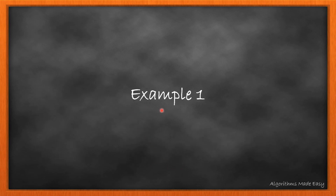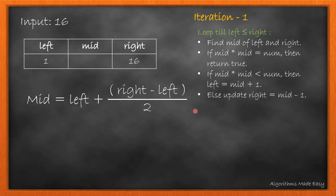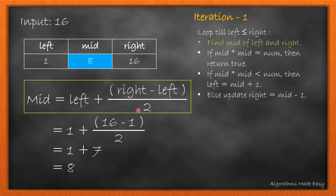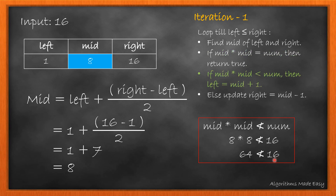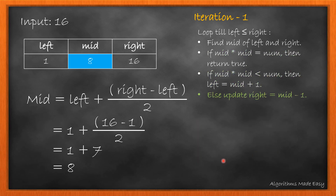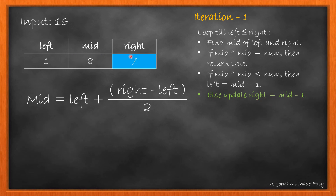Let's start with the first example. Initially, left will be 1 and right will be 16. Since left is less than or equal to right, we move ahead with the first iteration. We will calculate the mid. We will check if its square is equal to num. As it is not, we move to the next step. Also, the square is not less than num, so we move to the else part and update right to mid minus 1.